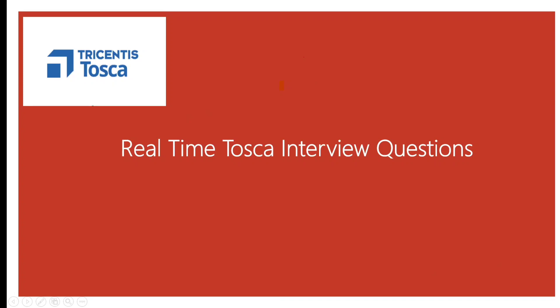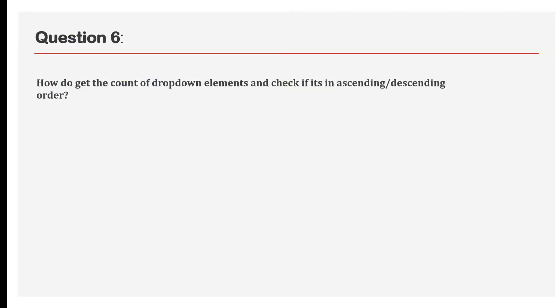Hi guys, welcome back. Today we will see our sixth question in the interview question series. The question is: how do we get the count of dropdown elements and check whether it's in ascending or descending order?